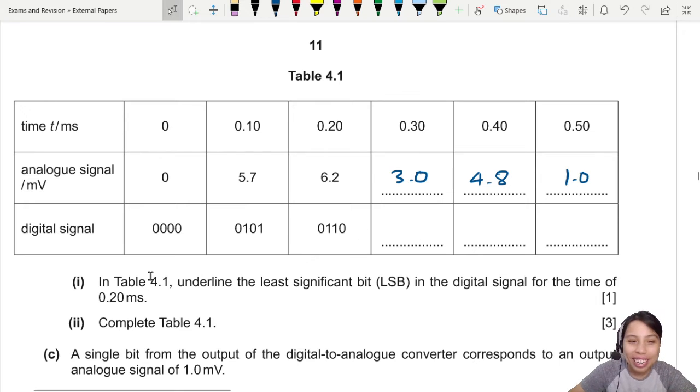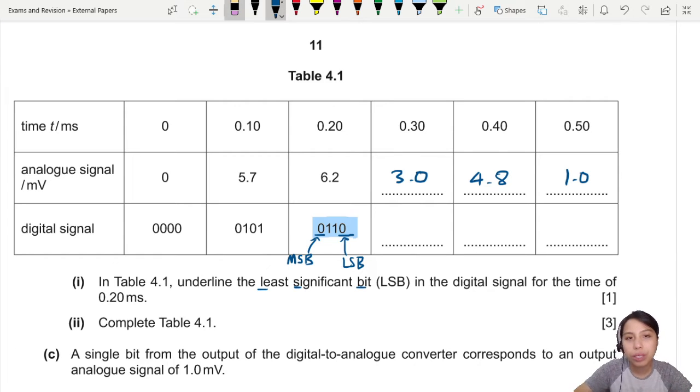Anyway, let's continue on this part. In the table 4.1, underline the least significant bit in the digital signal for 0.2 milliseconds. So, this one. We're going to look at the digital signal in the binary form. Least significant bit would be the right-hand side. If they want the most significant bit, they'll be the left-hand side. This is most significant bit. So, it's the least significant bit, LSB. So, you just don't underline the left side. I'm just underlining for you to see. That is, if you get correct, just one mark. This is just B1. If you do your LSB on the right-hand digit.